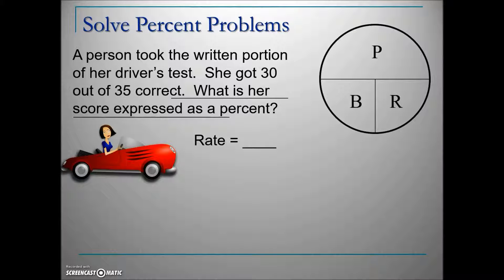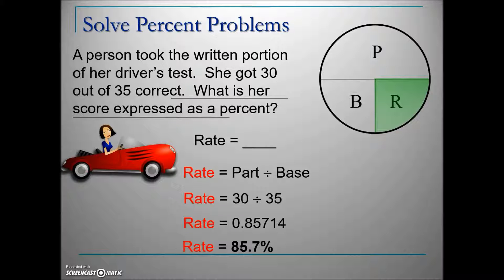In the formula circle, cover the rate—that leaves P over B, meaning part divided by base. Plugging in the information: 30 out of 35. The 35 is the total or base, leaving 30 as the part. Divide 30 by 35 to get a decimal. Since rate is expressed as a percent, move the decimal two places right. With rounding, the answer is 85.7%.